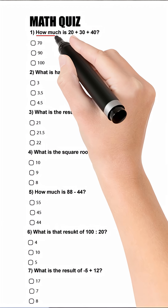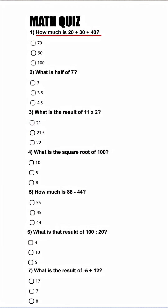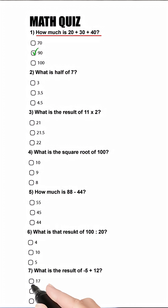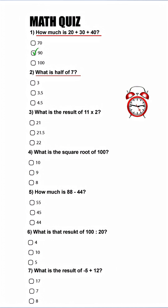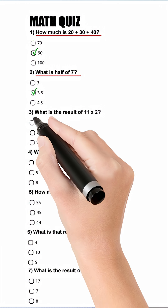Question 1. How much is 20 plus 30 plus 40? 90. Question 2. What is half of 7? 3.5.